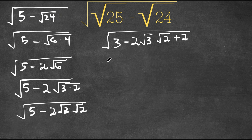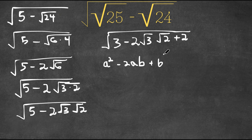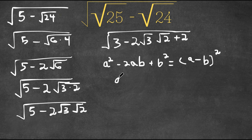Now if we have something in the form a squared minus 2ab plus b squared, this is equal to a minus b squared. So in this case, a is equal to the square root of 3 and b is equal to the square root of 2.